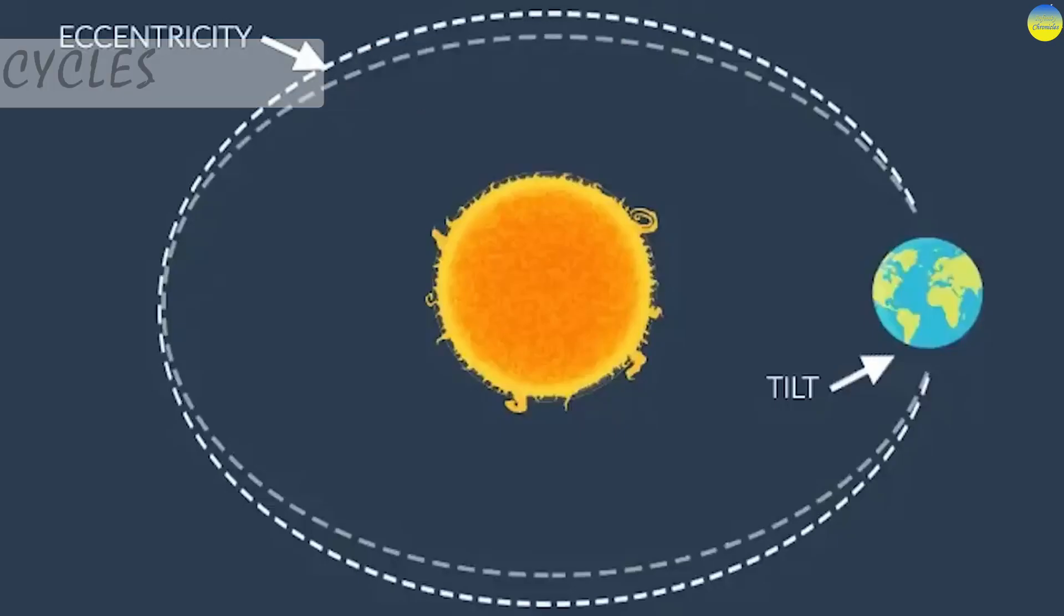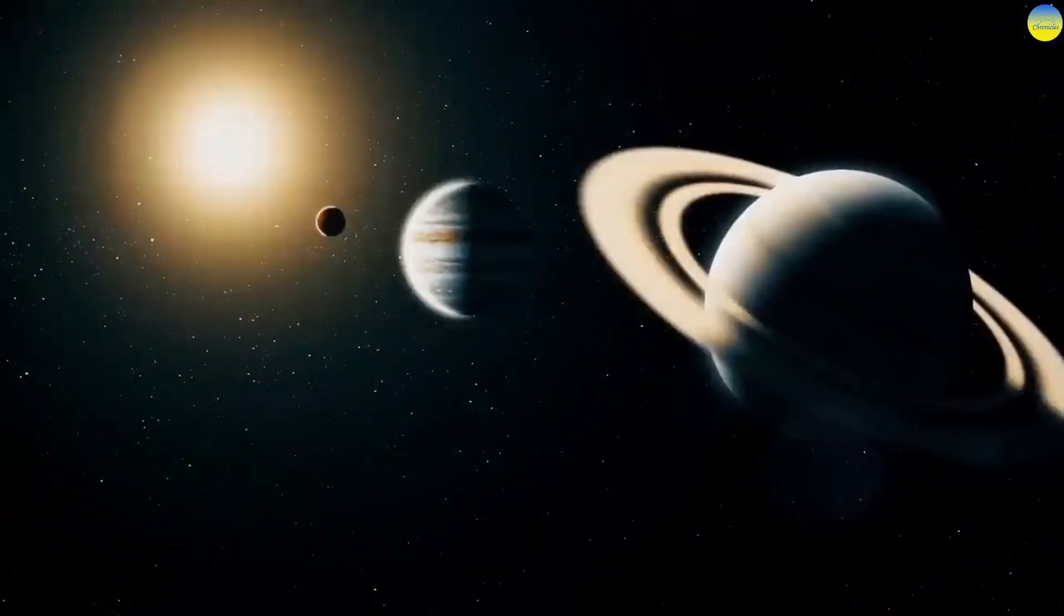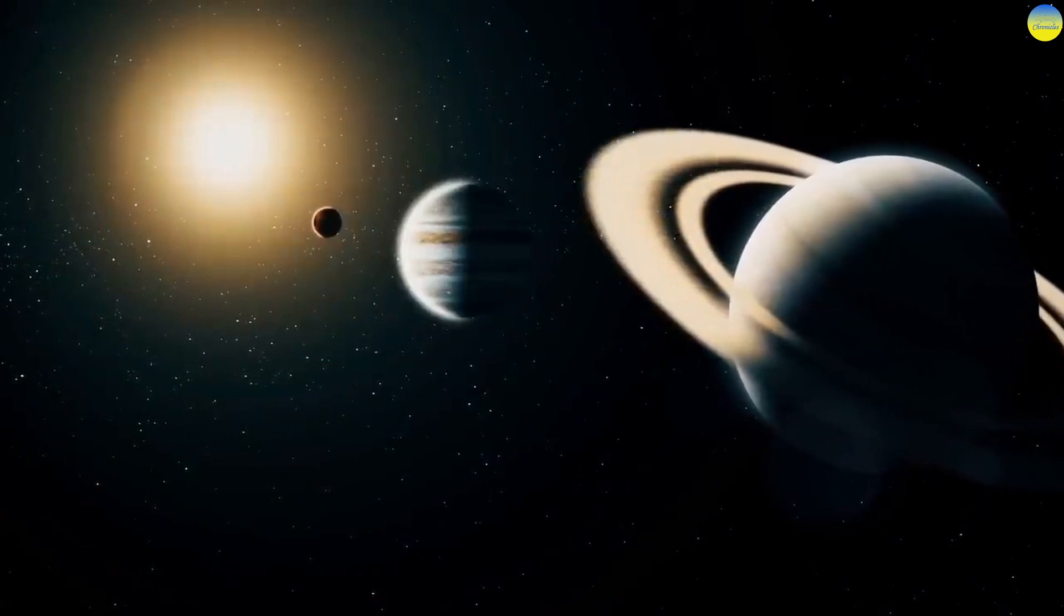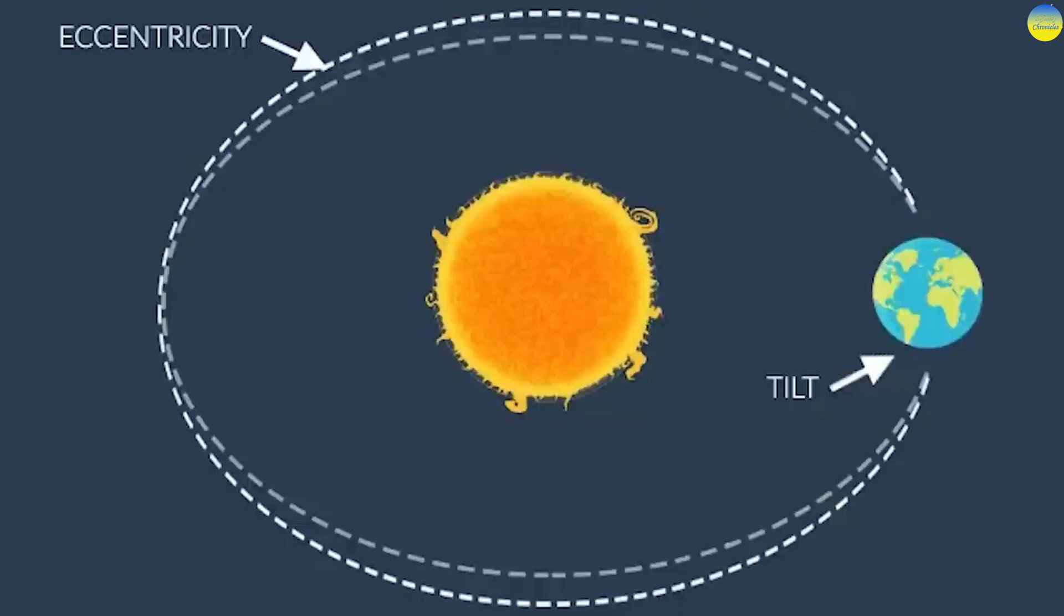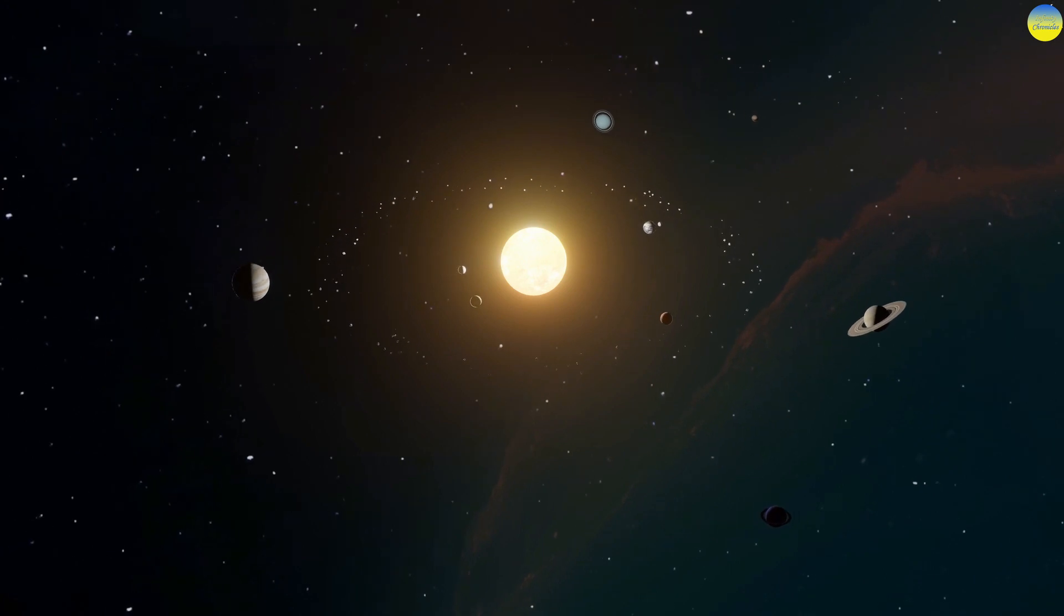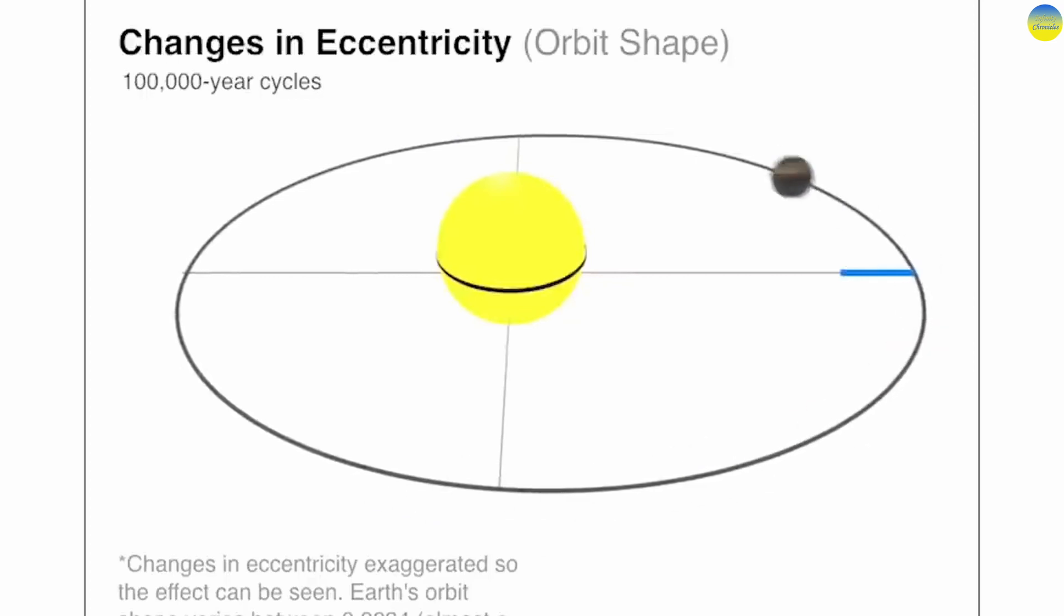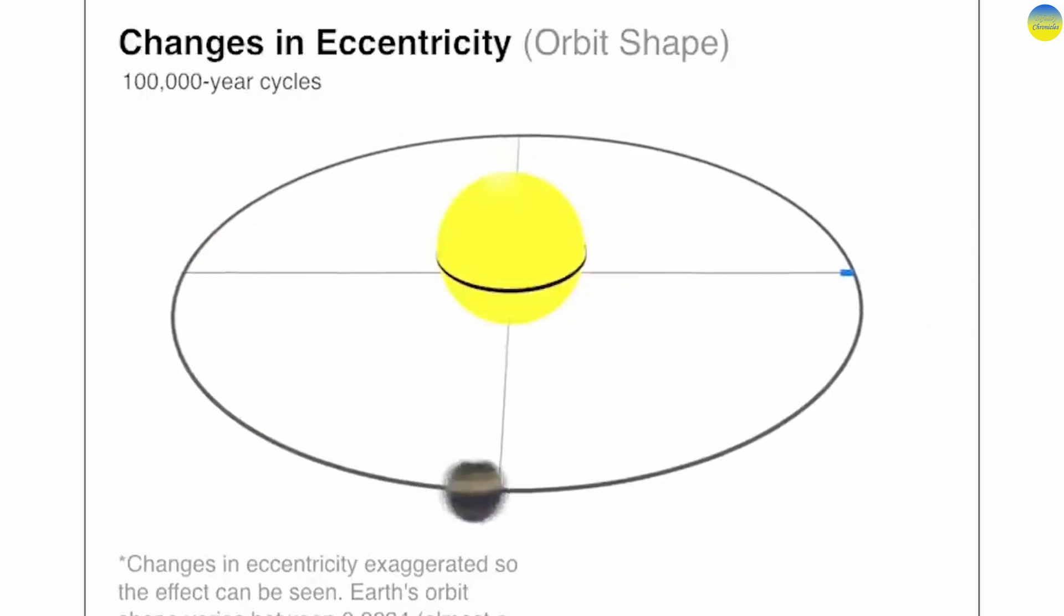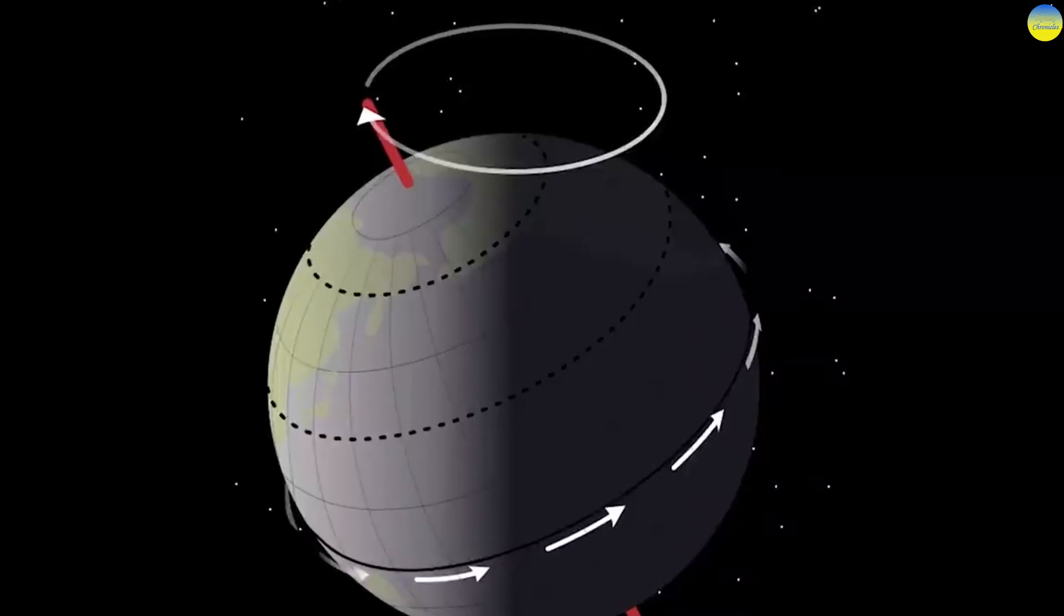Milankovitch cycles. The Earth's orbit approximates an ellipse. Eccentricity measures the departure of this ellipse from circularity. The shape of the Earth's orbit varies between nearly circular and mildly elliptical. Eccentricity varies primarily due to the gravitational pull of Jupiter and Saturn. However, the orbital ellipse's semi-major axis remains unchanged. According to perturbation theory, which computes the evolution of the orbit, the semi-major axis is invariant.